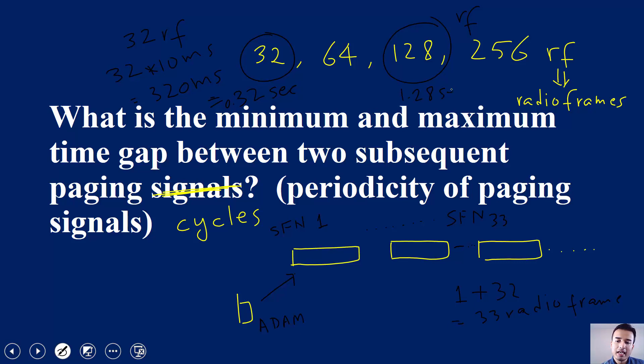What is the minimum periodicity? Second part of the question. The minimum periodicity is 0.32 seconds and the maximum periodicity is 2.56 seconds. And that's what you see being given based on the default paging cycles.